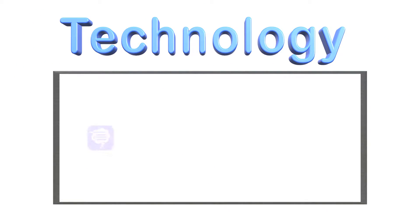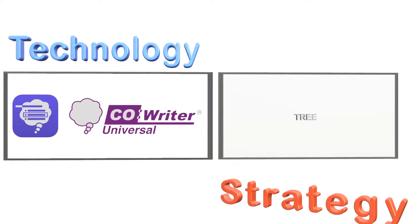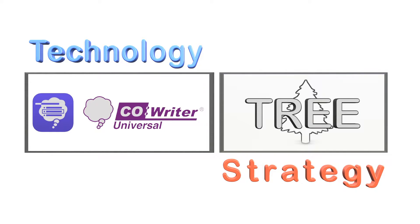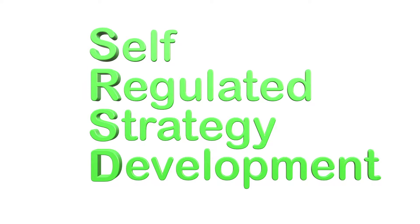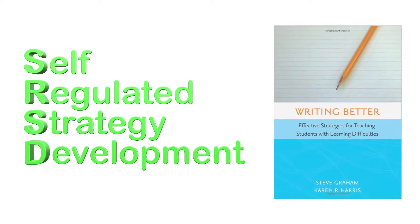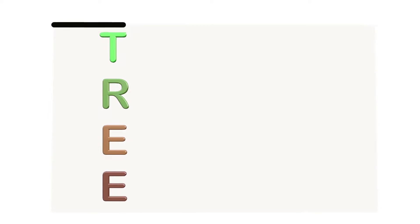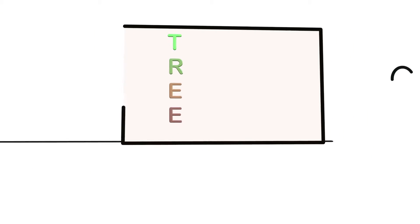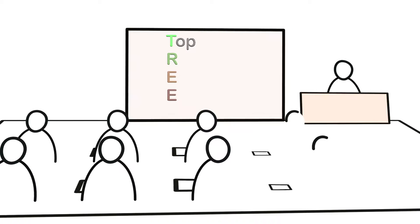Today, we will focus on an app called CoWriter Universal and a writing strategy called TREE. TREE is a strategy used frequently with the Self-Regulated Strategy Development, or SRSD model, by Stephen Graham and Karen Harris. Part of the SRSD model encourages teachers to rehearse and practice using the strategy before asking students to write and revise with it.